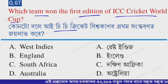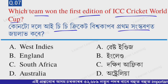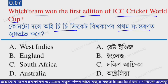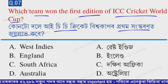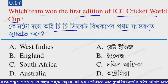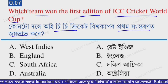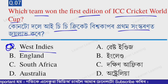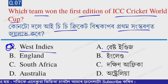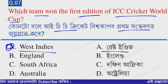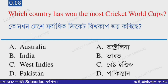Next question: which team won the first edition of the ICC Cricket World Cup? Option A is West Indies, B is England, C is South Africa, and D is Australia. The correct option is option A — West Indies. West Indies won the first ICC Cricket World Cup.